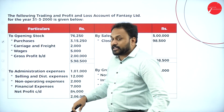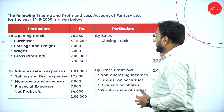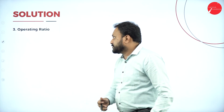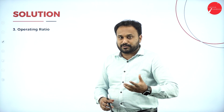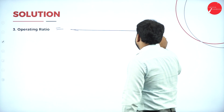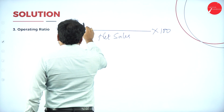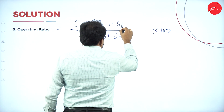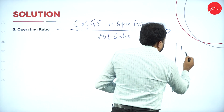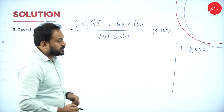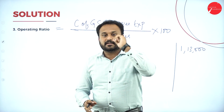Next is Operating Ratio. The formula is: Cost of Goods Sold plus Operating Expenses, divided by Net Sales, into 100. The denominator is always Net Sales. We already know Operating Expenses is 1,13,000. Now, Cost of Goods Sold means the total cost directly associated with goods sold — all the direct expenses involved in selling the goods.